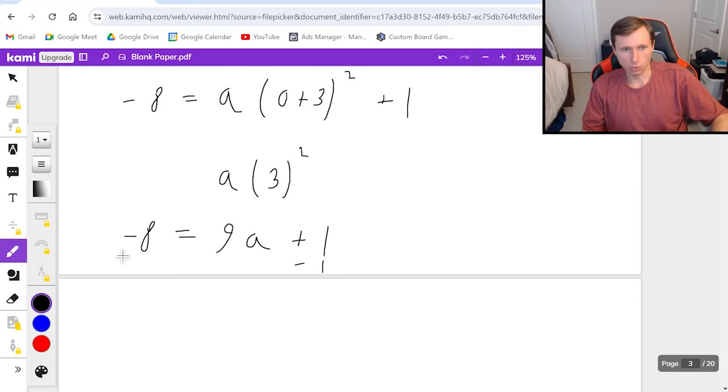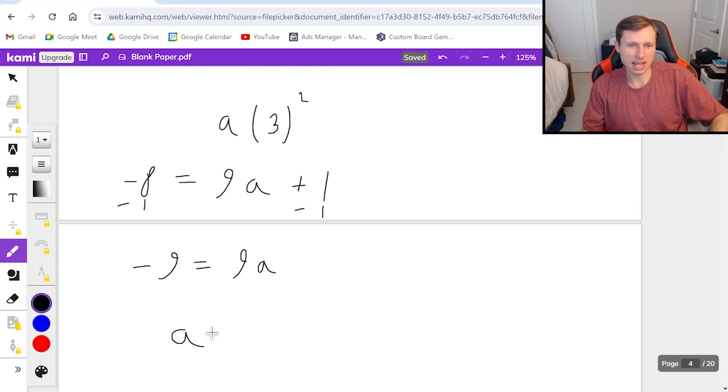Then I will subtract 1 from both sides. I get negative 9 equals 9a. And that means a is just going to be, when I divide both sides by 9, negative 1.